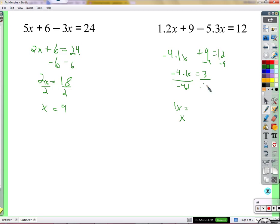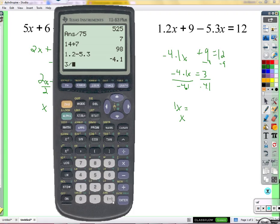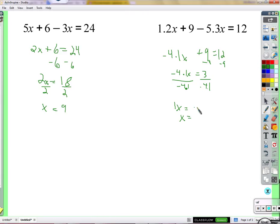And 3 divided by negative 4.1 is 3 divided by, I'm just going to do 4.1, and then I'll make it negative because I know a positive divided by a negative is a negative. So we'll round it to .732. So negative .732. All right.